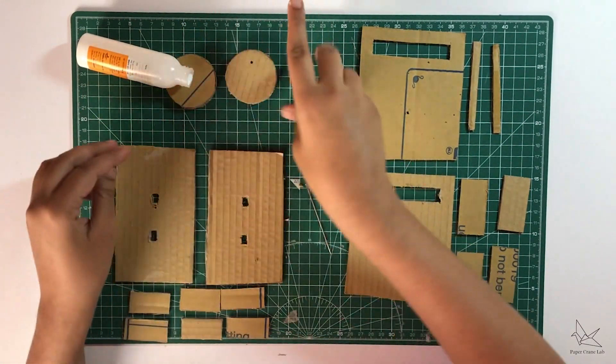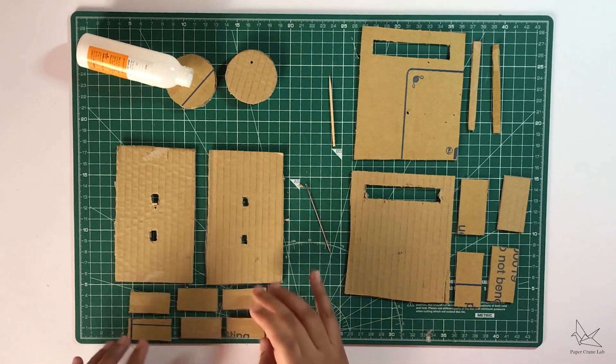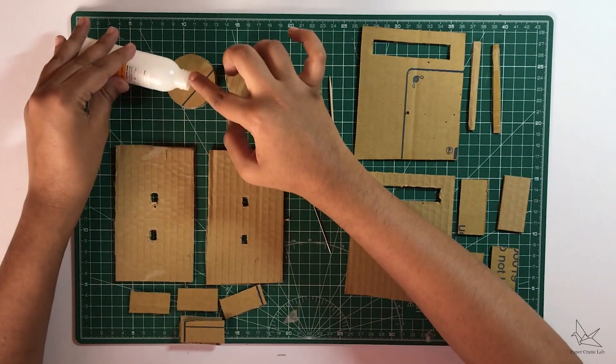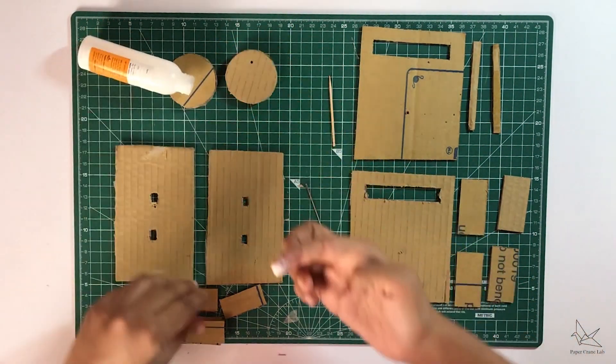While the discs are drying, let's also take these six small rectangles. We're going to create two stacks of three each and glue them together as well.